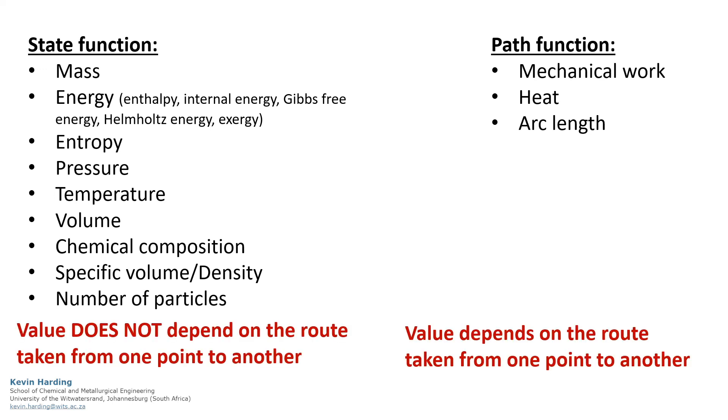Variables that are affected by the route we take are referred to as path functions. The most common in engineering are mechanical work and heat, since these depend on whether the steps moving from A to B were adiabatic, isothermal, isentropic, or similar.